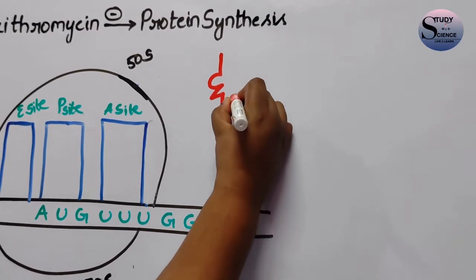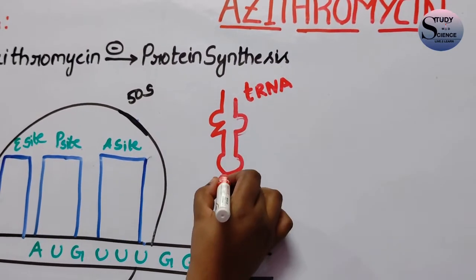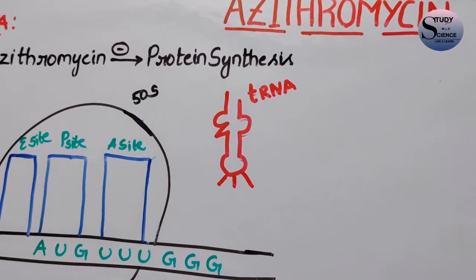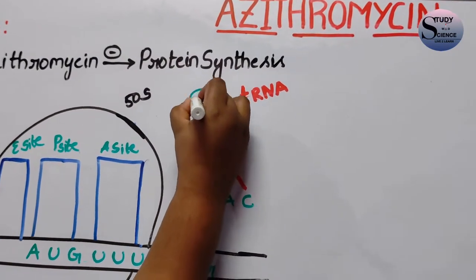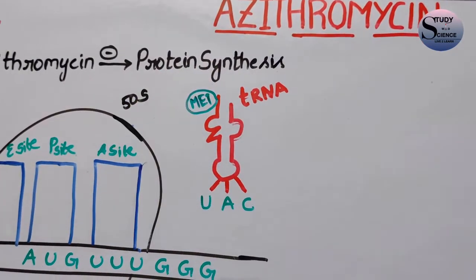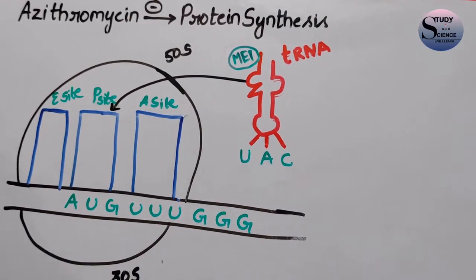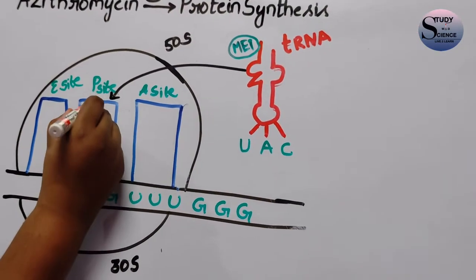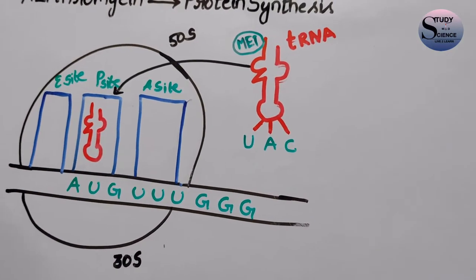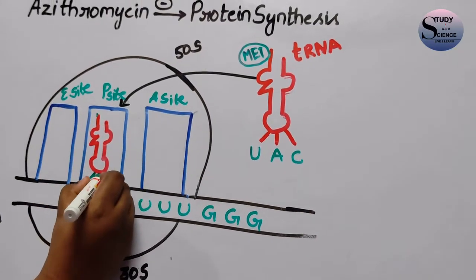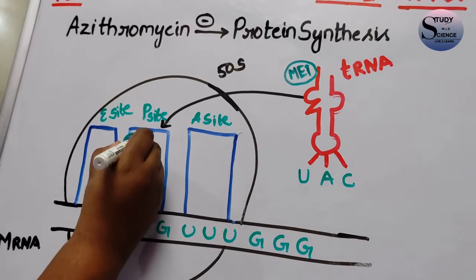There is a tRNA which contains anticodons that can code for the specific mRNA, and also the amino acid which can code for the specific codes. This tRNA enters into the P site of the 50S ribosome. There is a tRNA which contains the anticodons UAC that can code for AUG, and also the methionine which is responsible for these codes.